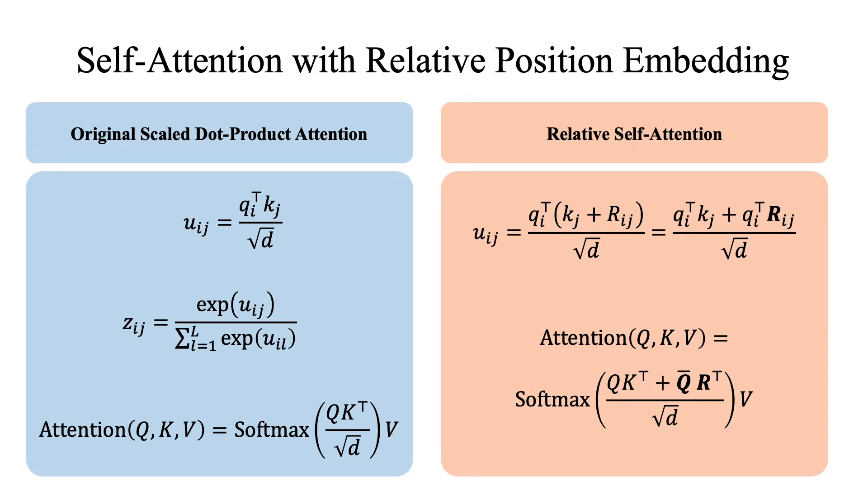So now let's see how we can incorporate this into the self-attention equation. In the original scaled dot-product attention in vector form shown on the left, we first compute the dot product between vectors q_i and k_j, and then normalize this as the exp of u_ij divided by the sum of all u_il's. Finally, the attention is given as the product of normalized attention weights multiplied by V. Now for relative self-attention, we add an extra term in u_ij.